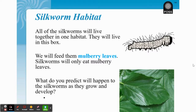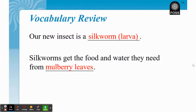Think about what you think the silkworm needs to live. All of the silkworms will live together in one habitat in this jar. We will feed them mulberry leaves — silkworms will only eat mulberry leaves and will not eat any other type of food. Silkworms get the food and water they need from mulberry leaves, so not only do they get their food but also their water from the leaves.